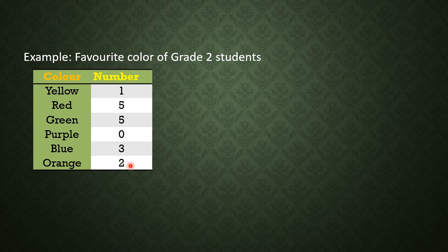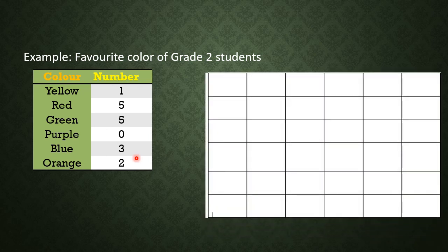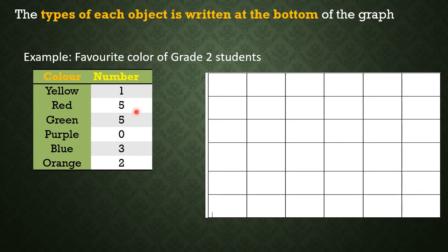Now we are going to present this data, this table, in a block diagram. To present this data in a block diagram, we are going to write the type of each object at the bottom of the graph. And what are the objects? They are the colors.